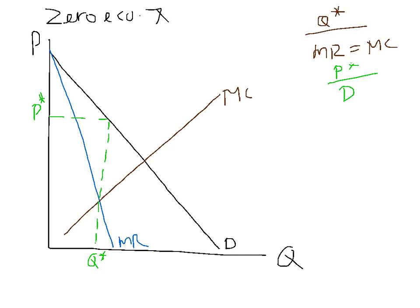Also, at this point, price must equal ATC if we have zero economic profit. So what must happen is the ATC must touch this point over here. The average total cost curve must touch that point, continues to fall, touches the marginal cost curve, then goes up. Price equals average total cost — zero economic profit.